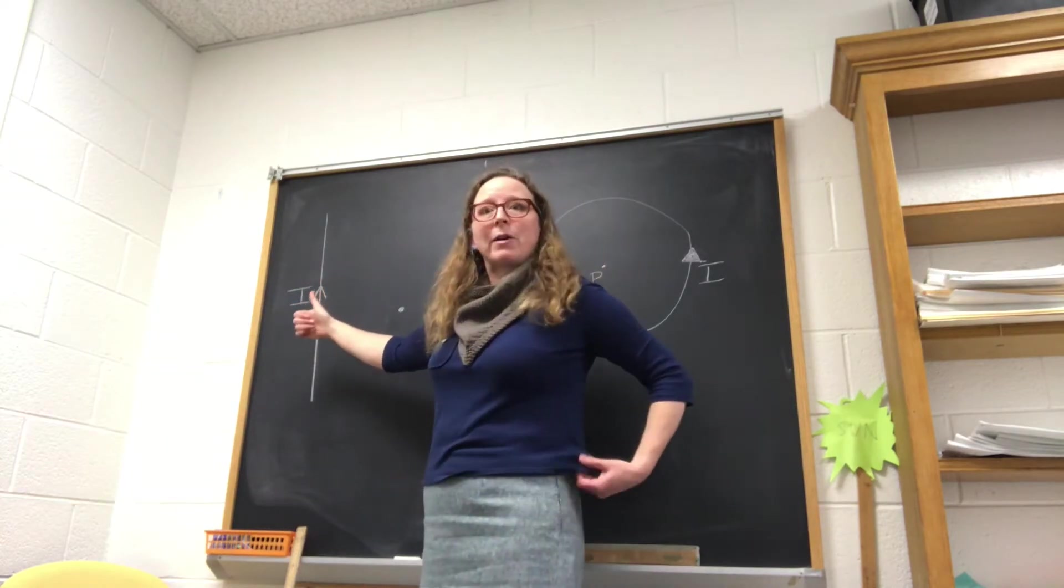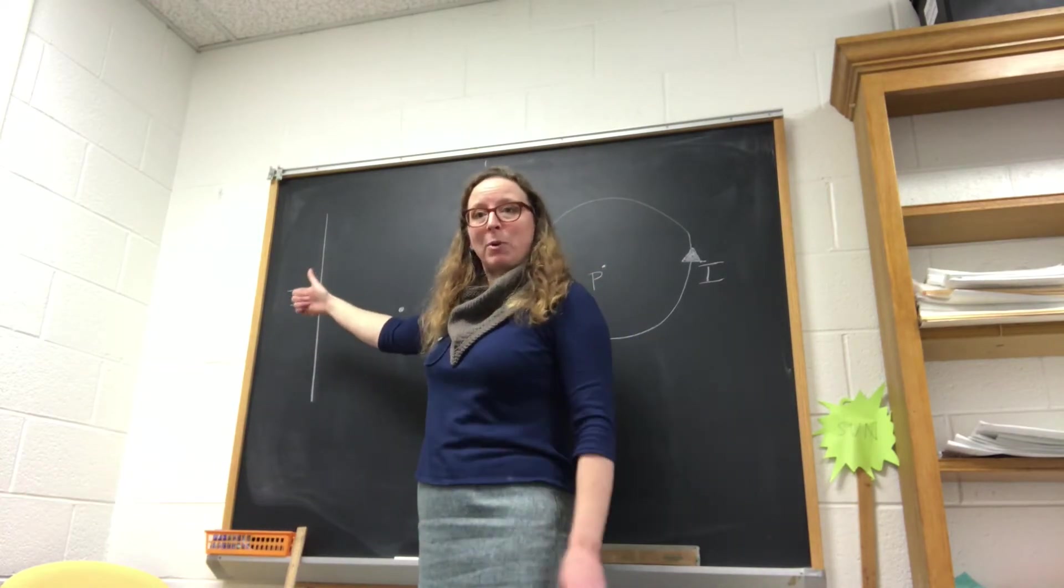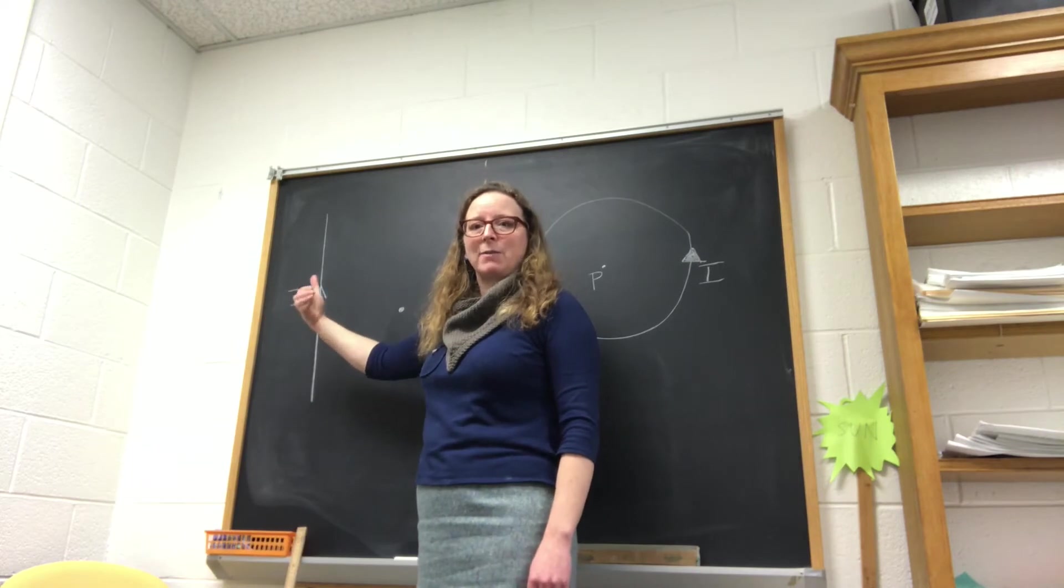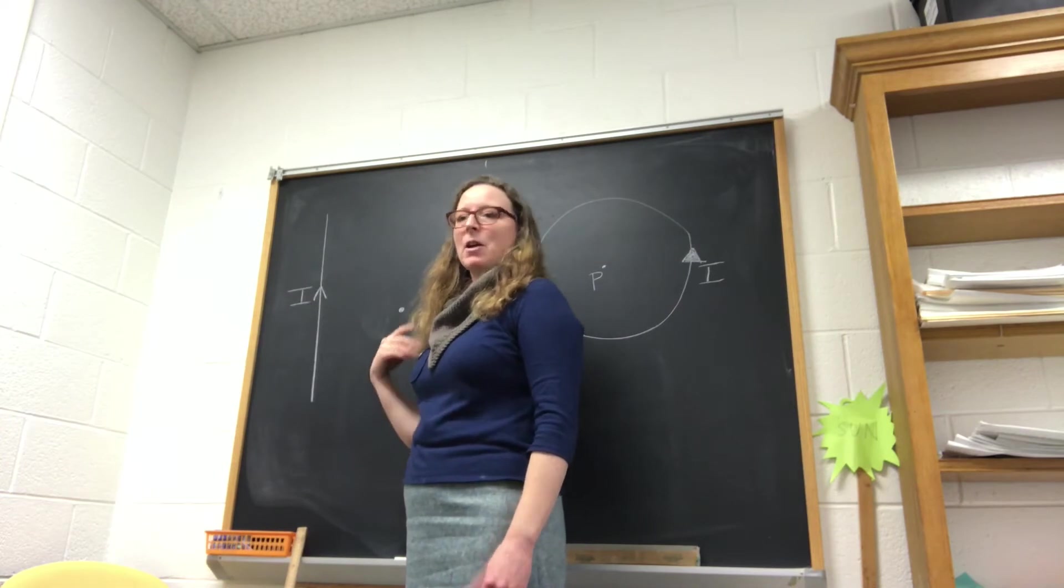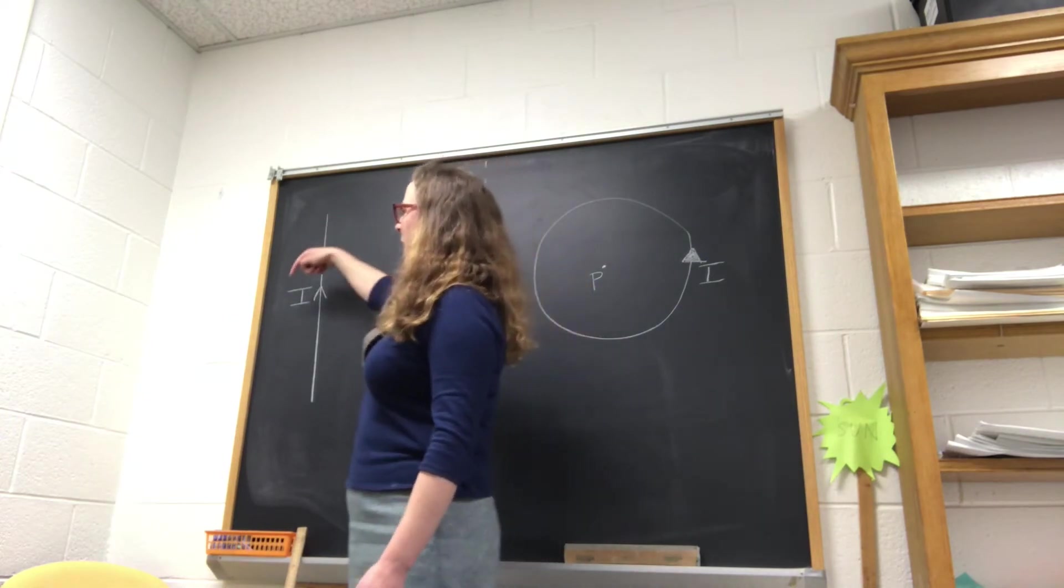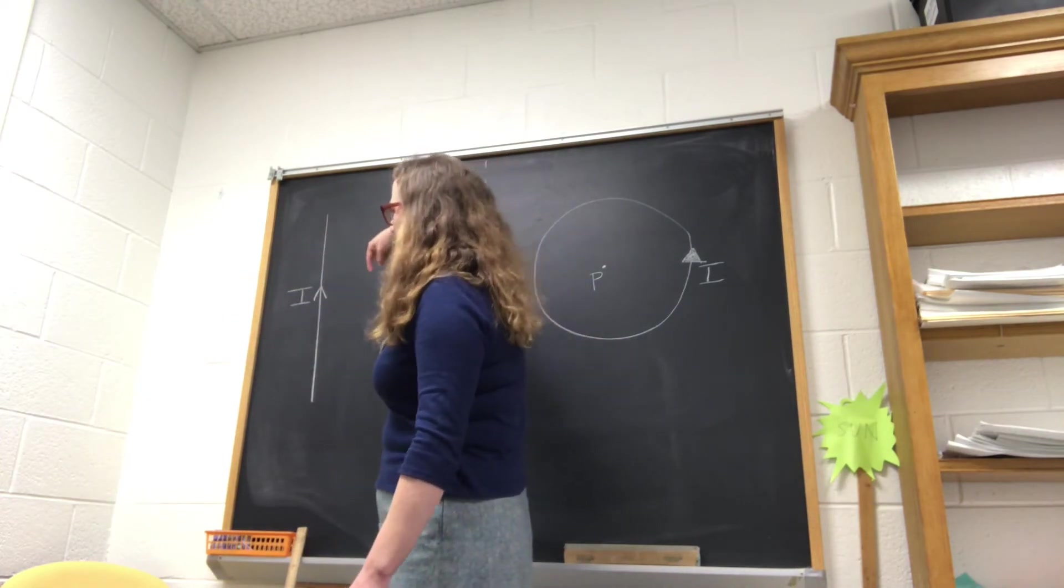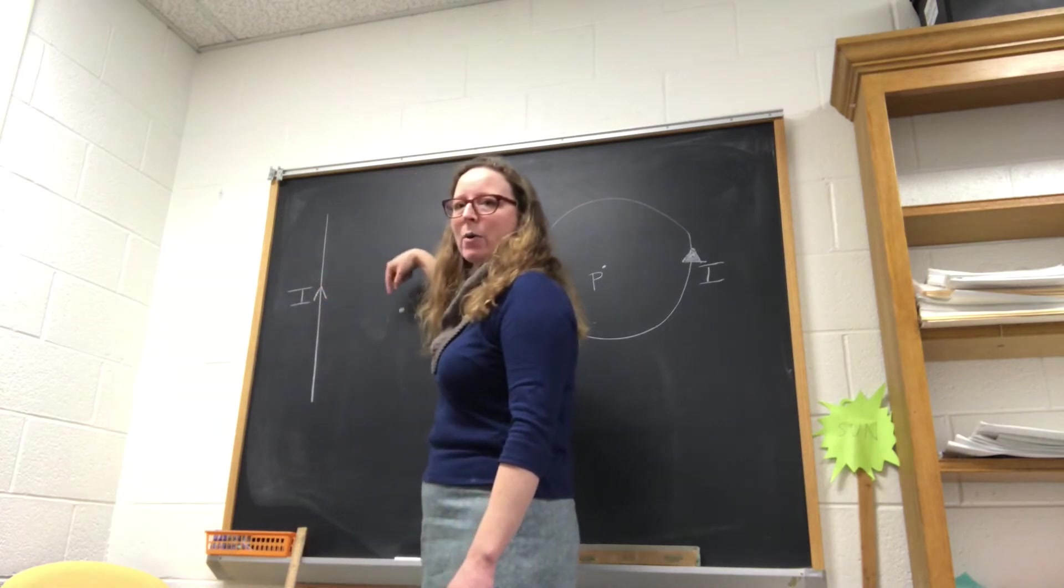What the curly straight rule says is that if my thumb is pointing that way, my fingers, as I sweep them around, are showing you what the shape of the magnetic field is. So what I wind up having here is a magnetic field that is circular and is going around this wire.